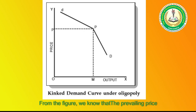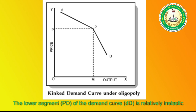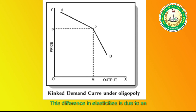From the figure, we know that the prevailing price level equals p, the firm produces and sells output equals om. Also, the upper segment dp of the demand curve dd is elastic, and the lower segment pd of the demand curve dd is relatively inelastic. This difference in elasticities is due to an assumption of the kink demand curve hypothesis.